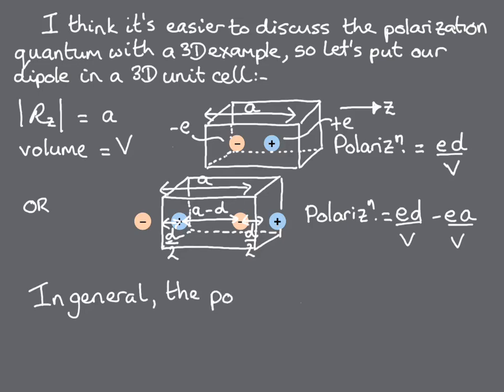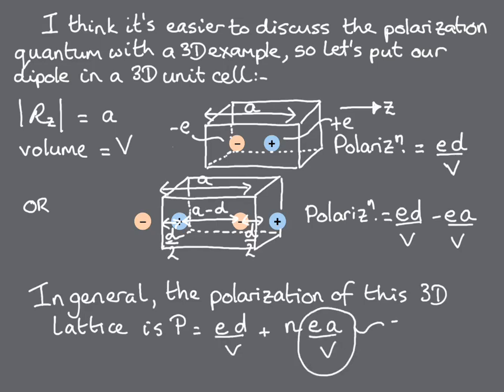Or in general, the polarisation in the Z direction of this 3D lattice is E times D over V plus N times E times A over V, where EA over V, or E times the lattice vector over V, is the polarisation quantum.